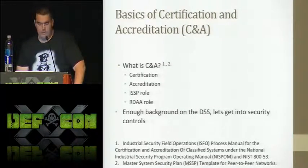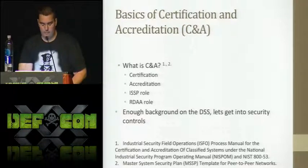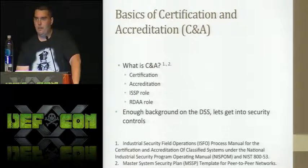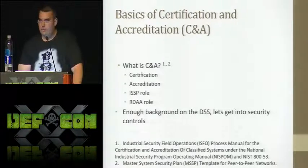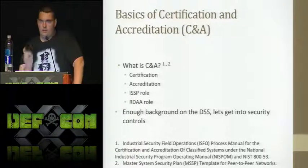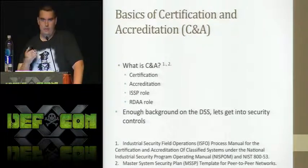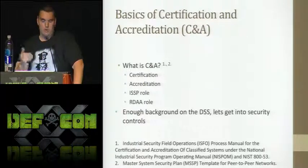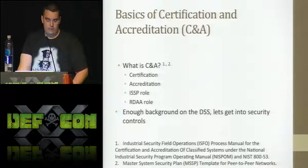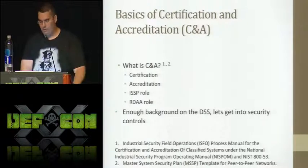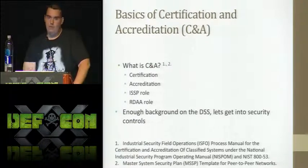How does a company process classified information? It goes through a certification and accreditation program. When I worked at the agency, a contractor would say they want to stand up — based on their contract — 50 or 100 secret systems. They fill out a 15-page document, click on a couple of things, and send it to me. I have 28 days to review it, but I can't tell if they're lying because I'm not validating anything — I'm just checking that they've signed it and it's correct. Then I send the document to my boss who approves it, and he doesn't really review it either.